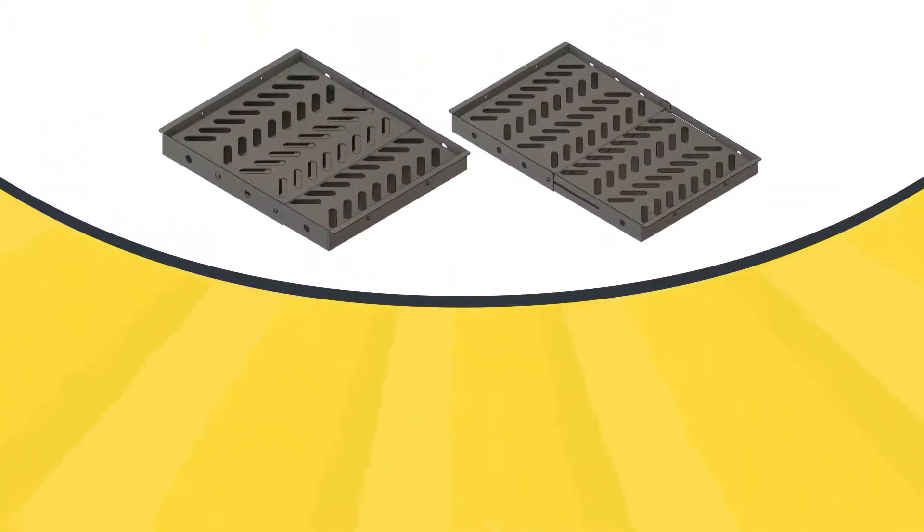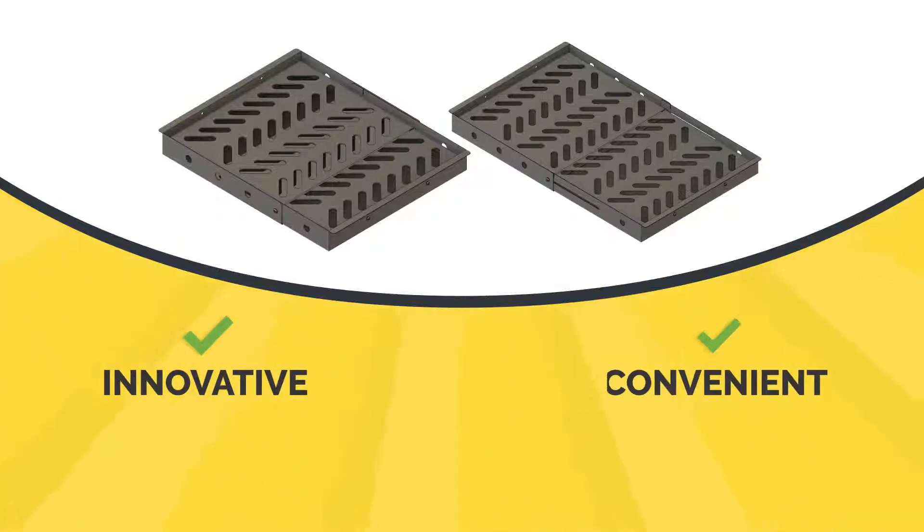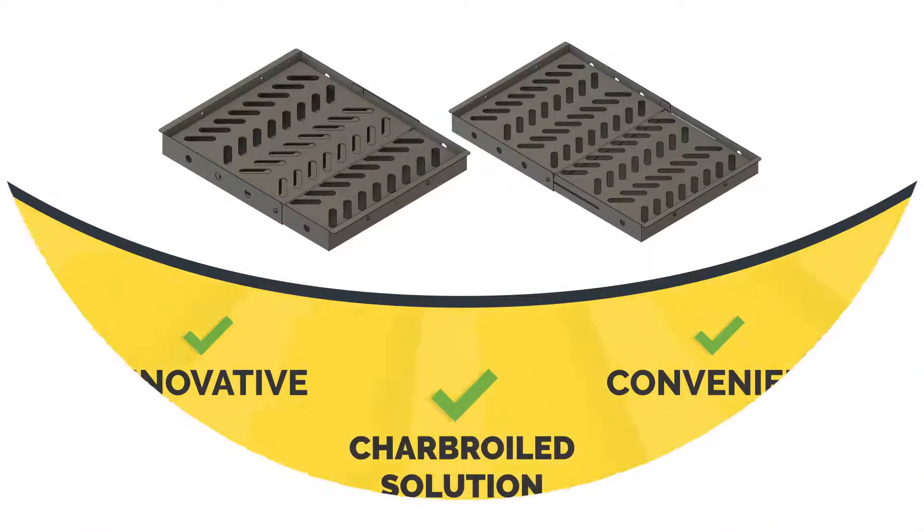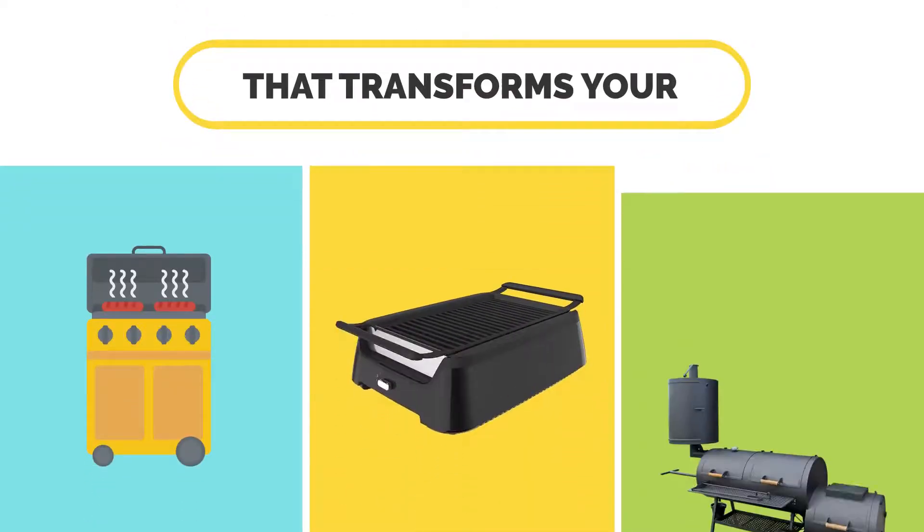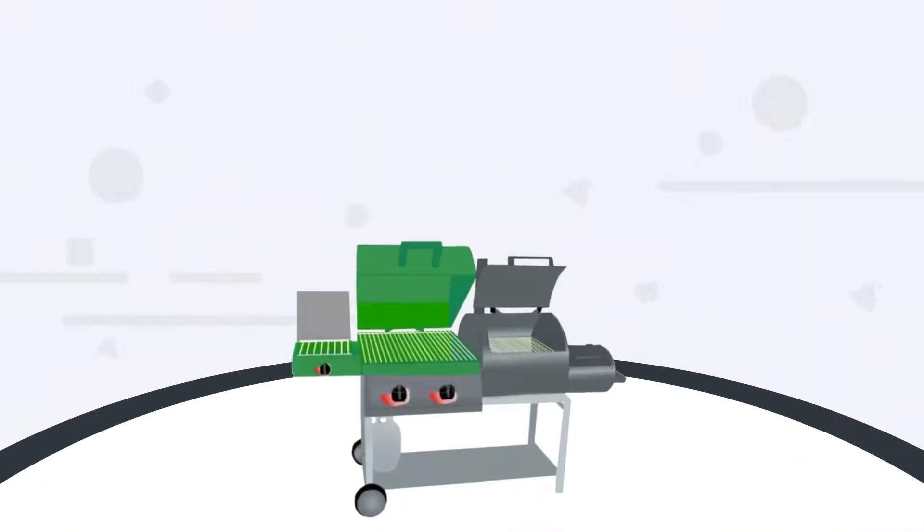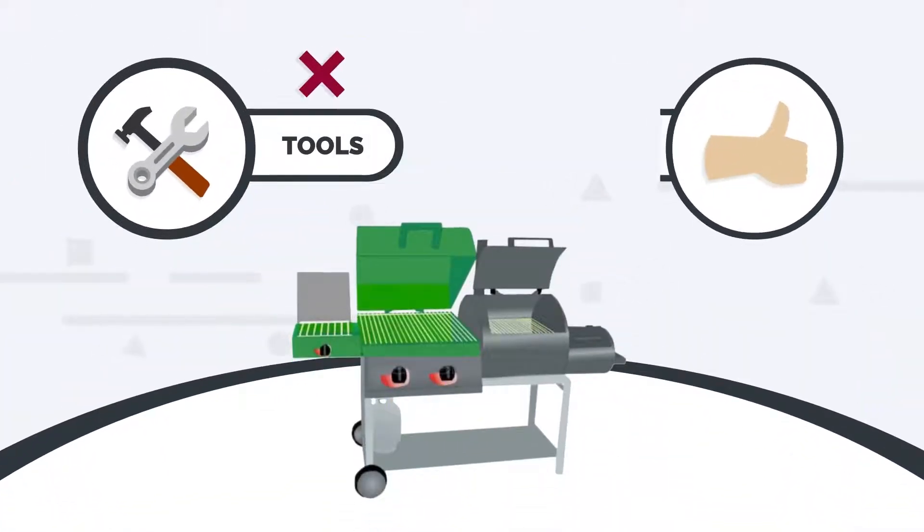The Char-Pit Universal Charcoal Grill Tray provides an innovative and convenient charbroiled solution that transforms your gas or electric grill or smoker into a combination grill that requires no tools and is easy to install.